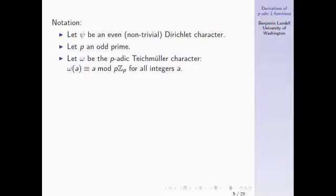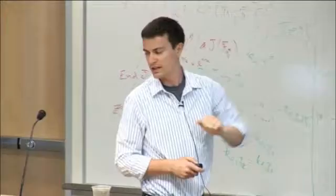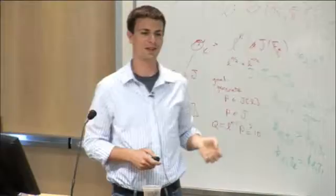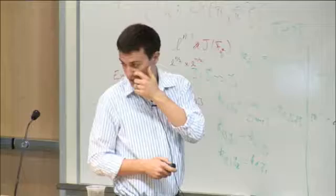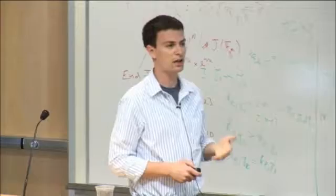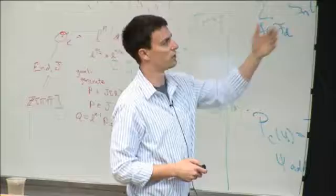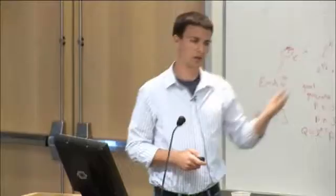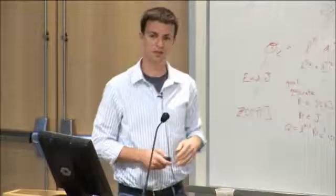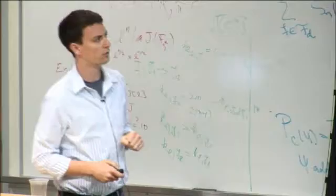We'll set some notation for the rest of the talk. For technical reasons, ψ will be an even, non-trivial Dirichlet character — for odd characters, everything works out to be zero, which isn't interesting. p will always be an odd prime, and ω will be the p-adic Teichmüller character. The easiest way to think about it: it's a character with conductor p such that its value at any integer is congruent to that integer mod p. It takes values in the (p−1)-st roots of unity, which are embedded in the units of Z_p.